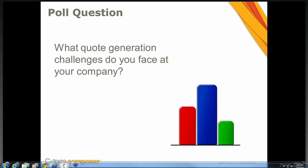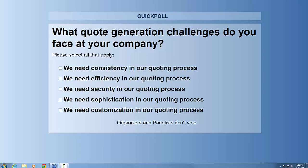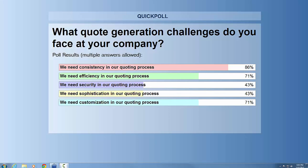The poll question is: what quote generation challenges do you currently face at your company? Go ahead and choose all of the answers that apply to your current situation. We've got some answers coming in. Looks like some people say we need consistency in our quoting programs, we need to generate efficiency, we need security in our quoting process, and it looks like we need some sophistication as well. So 71% say we need customization in our quoting process and 86% say we need consistency. Those are some great things to work towards as you're generating your quoting solutions.